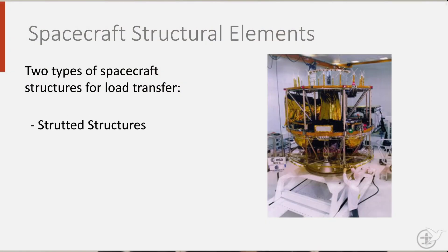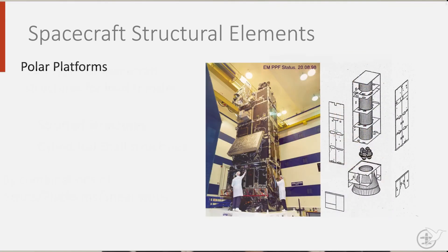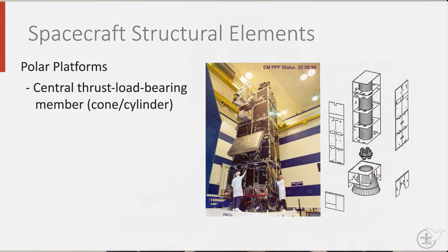Strutted structures, which are often three-dimensional trusses optimized for carrying loads, as can be seen here. Or cylindrical cell structures, also known as polar platforms. Polar platforms are characterized by a central load-bearing member, such as a cone or a cylinder.